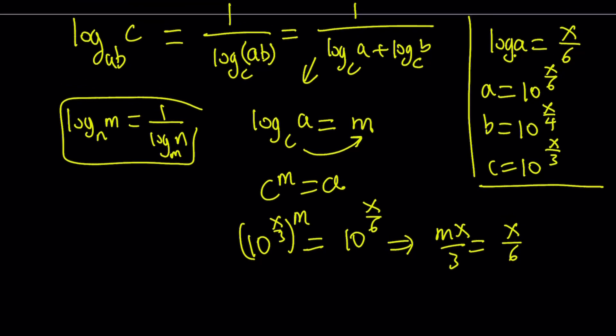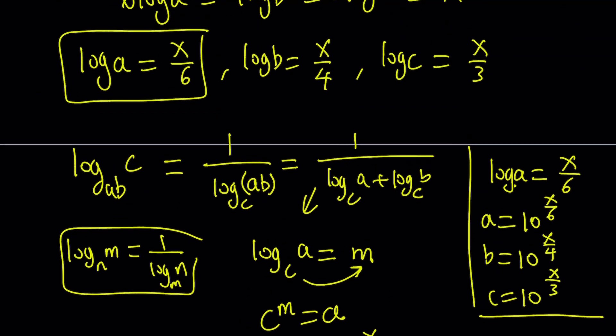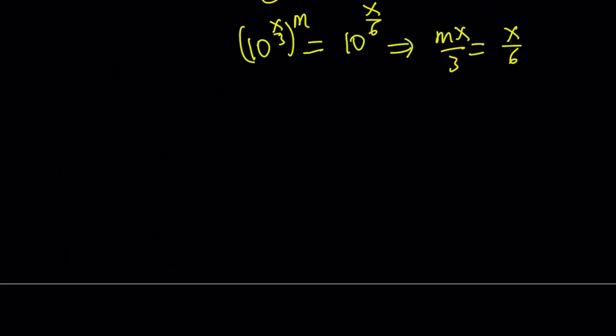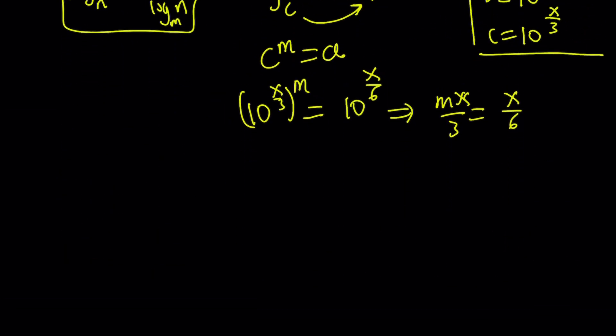Obviously X does not equal 0 as long as A, B, C are not equal to 1. If they are, then obviously this is not going to work because you don't want 1 as a base. So they're different from 1. So X cancels out and we end up with M equals 1 half. All right? So M equals 1 half. Let's go ahead and save that result.